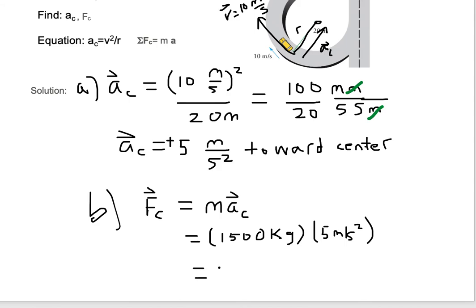So I'll say equals 7,500. And now our units are kilogram meter per second squared. Well, a kilogram meter per second squared is the same thing as a Newton. So you can leave it as kilogram meter per second squared, if you so desire, and leave your centripetal force here.